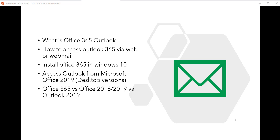The other one is the desktop version. When you install the desktop version, you will get Office applications like Word, Excel, PowerPoint, and Outlook — all of these things in your local system.